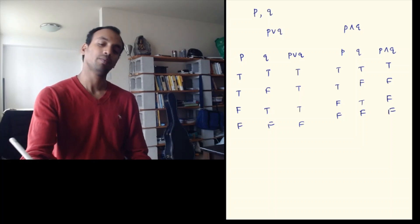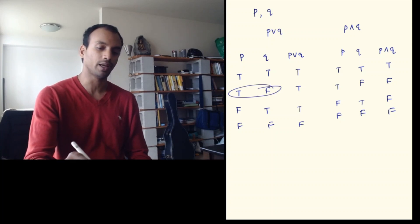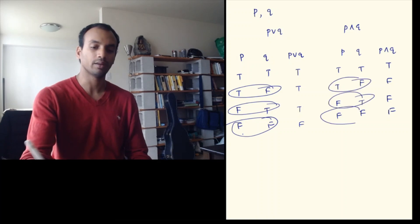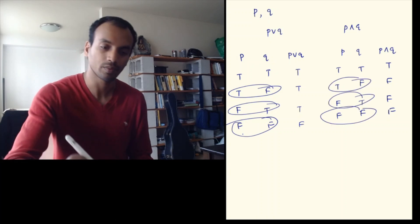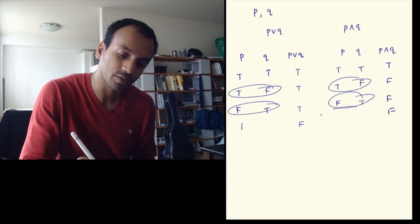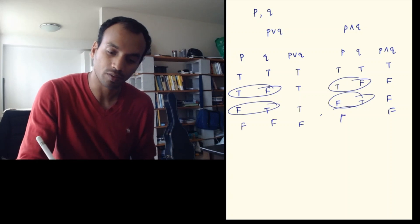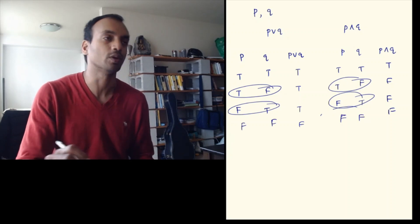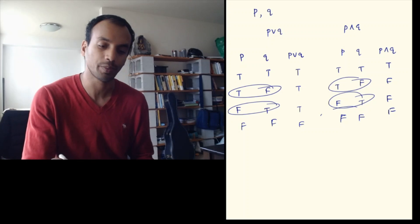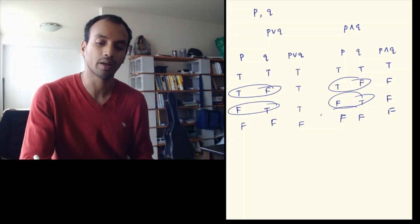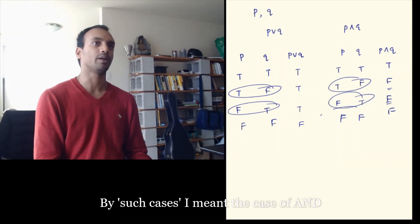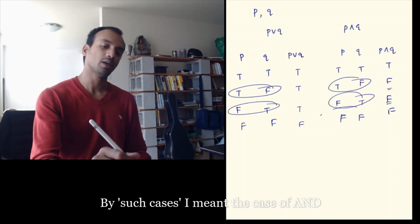Looking at the two truth tables, for two different combinations of p and q these propositions clearly differ. For example, when p is true and q is false, p∨q is true but p∧q is false; similarly when p is false and q is true. Only false∨false and false∧false both give false. So p∨q and p∧q cannot be equal in the sense of propositional logic.